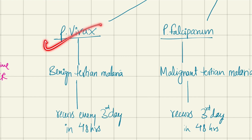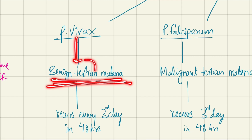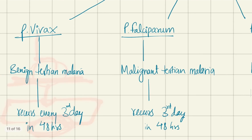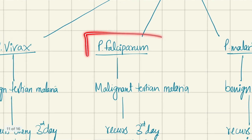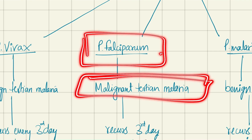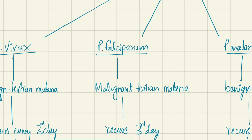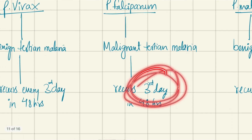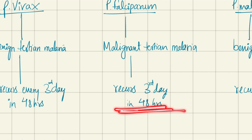First, Plasmodium vivax is also known as benign tertian malaria, meaning the fever will recur every third day or in 48 hours. Next, Plasmodium falciparum is also known as malignant tertian malaria — this is a very dangerous one — and here also the fever recurs every third day, that is in 48 hours.